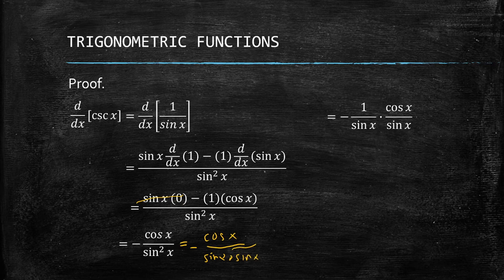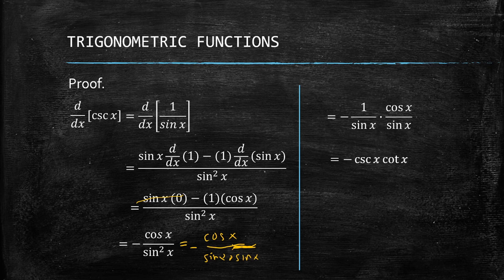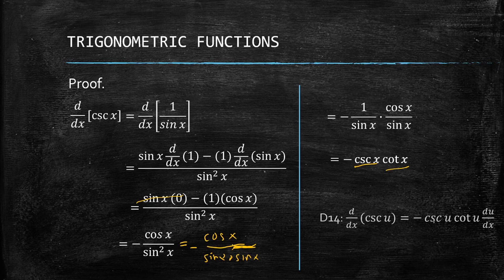We separate this as (1/sin(x))·(cos(x)/sin(x)), keeping the negative. Using identities, 1/sin(x) = csc(x) and cos(x)/sin(x) = cot(x). Generalizing, this gives us D14: the derivative of csc(u) equals −csc(u)·cot(u)·(du/dx).